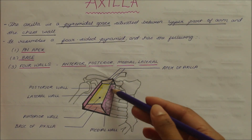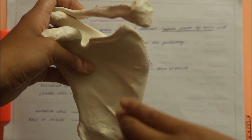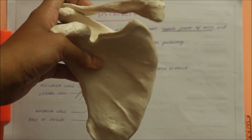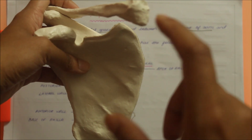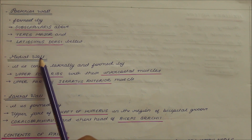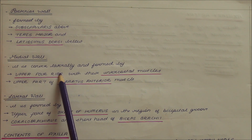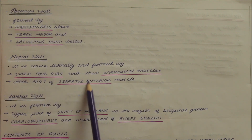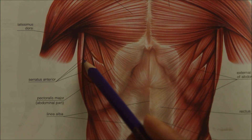Next we have the medial wall. The medial wall is convex laterally and is formed by the upper four ribs along with their intercostal muscles and the upper part of the serratus anterior muscle. This is the serratus anterior muscle.